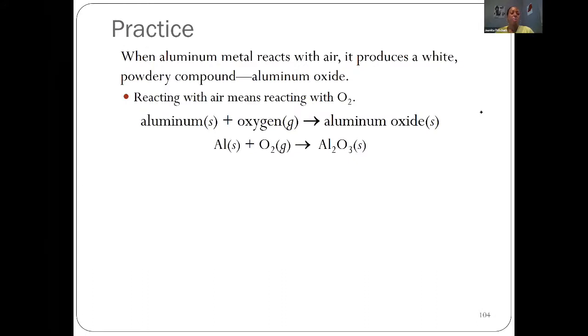Let's try some examples. When aluminum metal reacts with air, it produces a white powdery compound aluminum oxide. From that sentence you should be able to develop the chemical equation. When aluminum metal, a solid, reacts with air - which in this class is simply oxygen - it produces aluminum oxide.